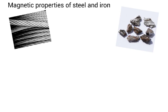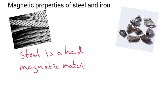The magnetic properties of steel and iron are slightly different. Steel is a hard magnetic material. What does that mean? It's difficult to magnetize. But once it is magnetized, it's difficult to demagnetize.